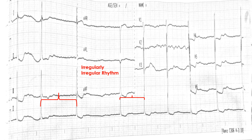Now, what we can see on this ECG — one thing is pretty obvious: he is having an irregular rhythm. If you can appreciate that in this long lead 2, there is obvious variation in R-R intervals, as marked by these asterisks. There is no doubt he is having an irregular rhythm, and since there is no regular pattern, this suggests an irregularly irregular rhythm.